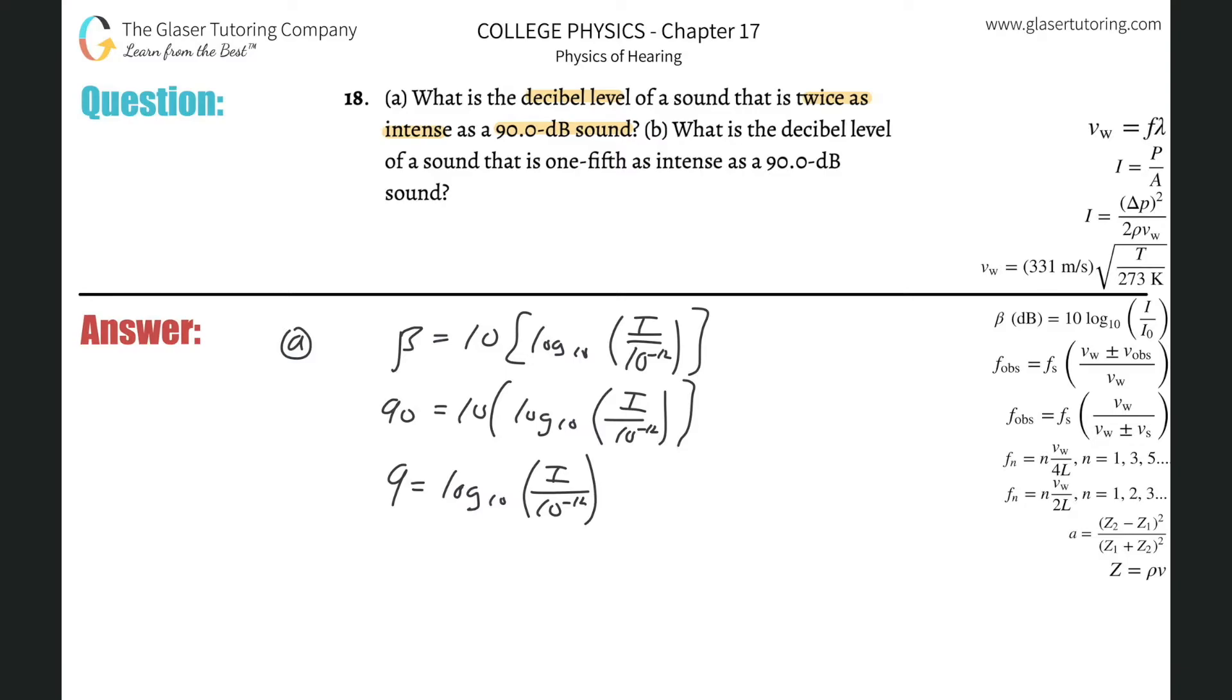Now I got to get rid of the log so I got to take the base, I got to place a base of 10 on both sides and then raise both sides up. So this gets to 10 to the 9th and this is 10 raised to the log base 10 of I all over 10 to the minus 12th. This whole thing cancels, that's the point. And then this whole thing basically just drops down.